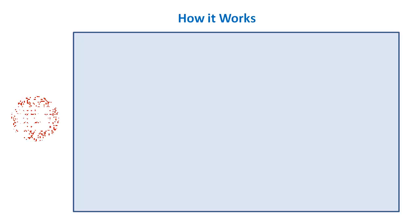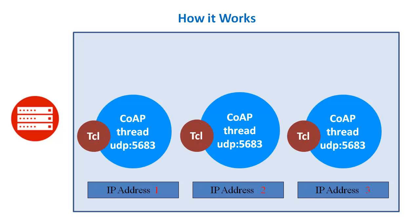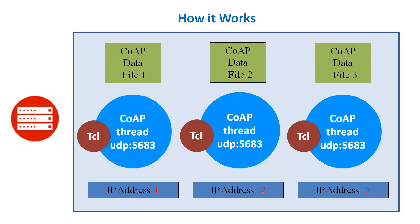Here is an example for simulating three devices. The simulator first adds the three IP addresses to the underlying TCP/IP stack using multi-homed IP. Next, three threads are initiated, one for each simulated device, that binds to port 5683 and listens for CoAP requests. When requests come in, information in the associated data file generates a response. The same approach can be used to simulate thousands of devices.